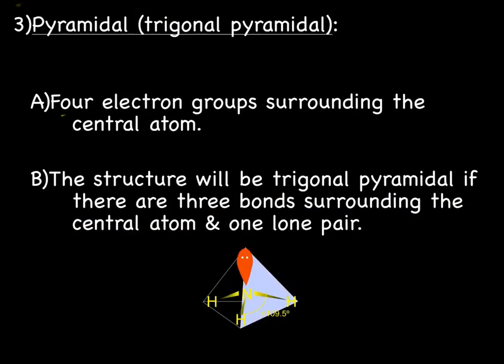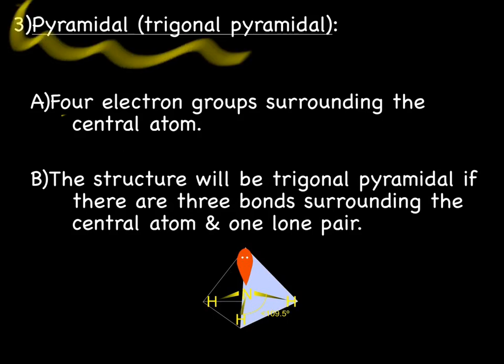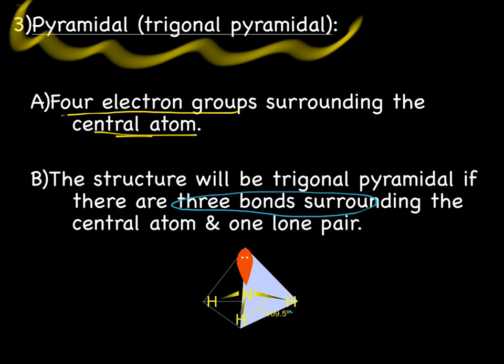The angle between the three electron groups in a trigonal planar molecule is 120 degrees. The next shape we're going to discuss is pyramidal or trigonal pyramidal. Trigonal pyramidal shapes have four electron groups surrounding the central atom, and these electron groups are divided into three bonds and one lone pair.